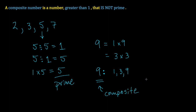You may be asking a big question at this point. A composite number is divisible by more factors than just 1 and itself, and a prime number is divisible only by itself and 1. What about 1? Well, 1 is neither composite nor prime. It is a very special number that doesn't fall into either of those categories.